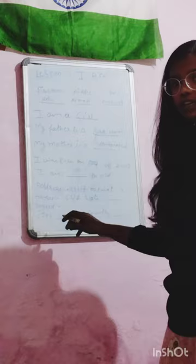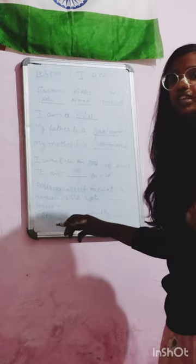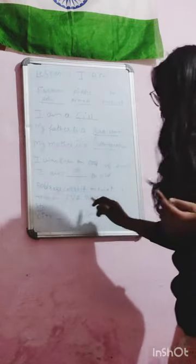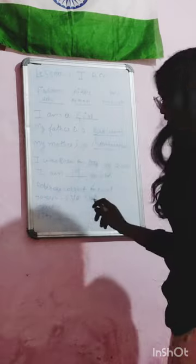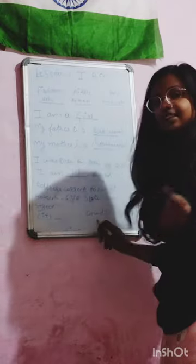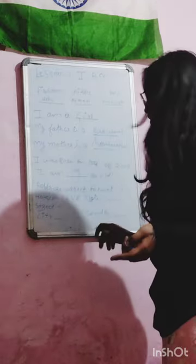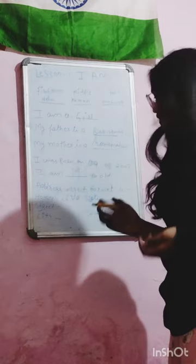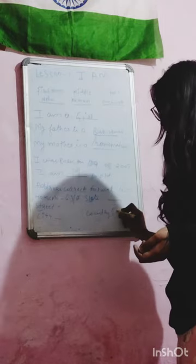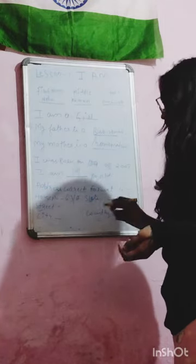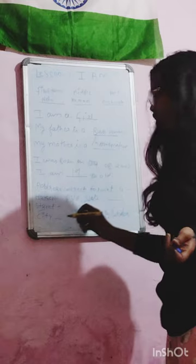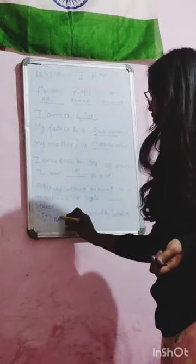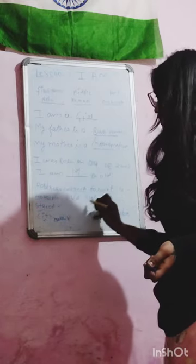Then street number or street name, then city — in which city do you live? And then state — in which state do you live? And at last there would be a country — in which country do you live? In our case we live in India. And for our city, I live in Sonia Vihar, so I write here Sonia Vihar.